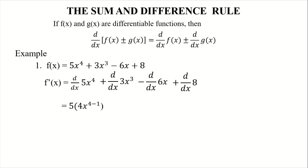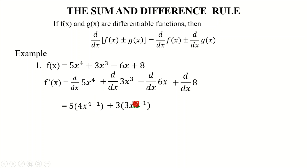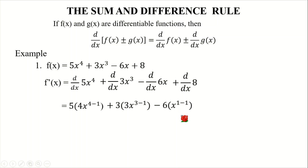So here, the derivative of 5x⁴: we apply the constant multiple rule — bring down the power, then multiply it by the coefficient, then reduce the power by 1. For 3x³, do the same: bring down the power, then reduce it by 1. For the derivative of 6x, from the identity rule, the derivative of x is 1, so 6 times 1 is 6.